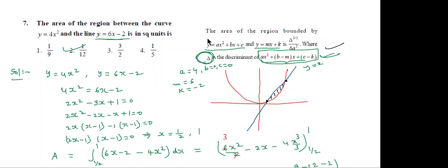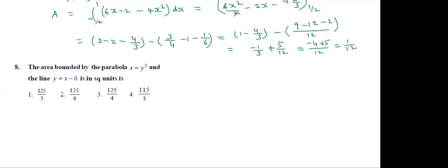Students, observe the 8th question: the area bounded by the parabola x = y² and the line y = x - 6. This is the same model but with y² = 4ax. The second curve can be written as x = y + 6. Solving both: y² = y + 6, giving y² - y - 6 = 0.